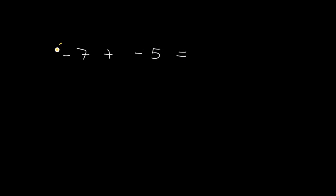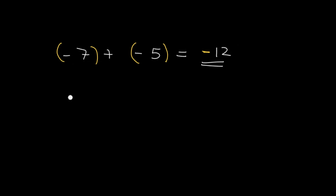As you can see, we are adding two negatives, and for sure our final answer has to be a negative number. So we can group these two negative numbers and add, giving us negative 12.